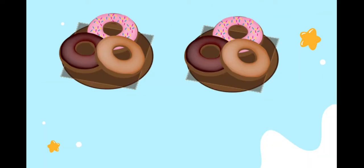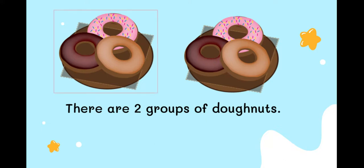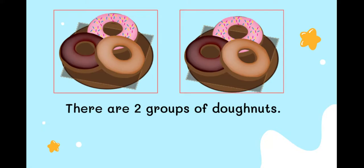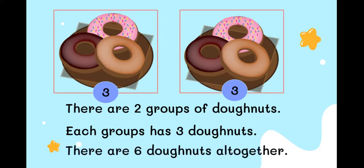Okay, we review about adding the same number first. Look at the picture. How many groups of donuts are there? Yes, there are two groups of donuts. Let's count together: one, two. And each group has three donuts. And how about all together? Three plus three is equal to six.